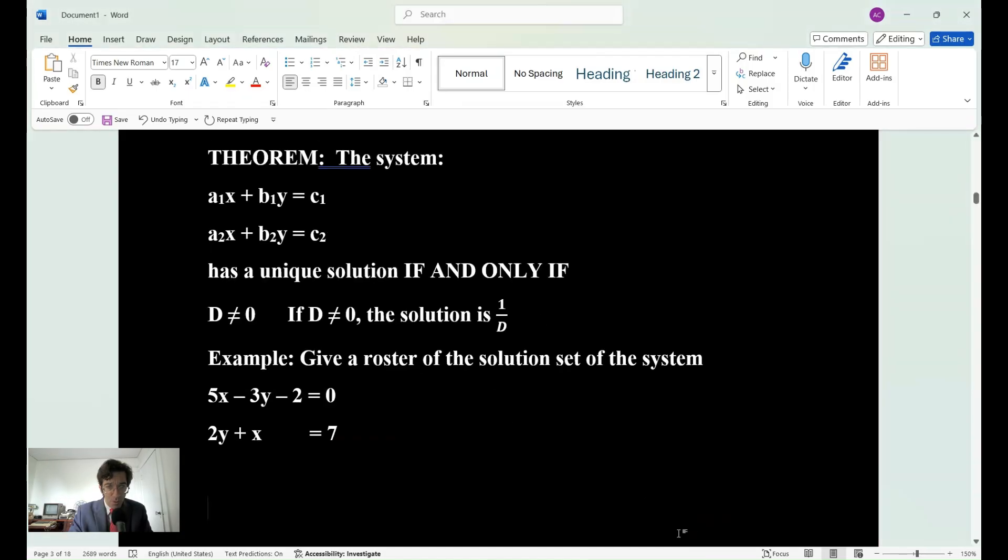In general we have a theorem here. If the system that we just saw, it will have a unique solution if and only if the determinant does not equal zero. If the determinant does not equal zero, the solution is one over D, the determinant and the system. Now see if you can solve this using determinants and see what you come up with.